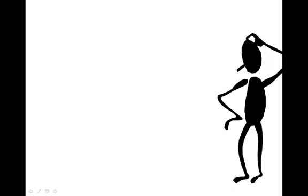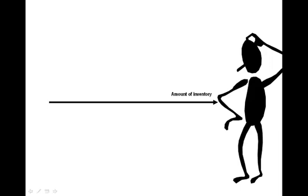So why are these effects so pervasive? In order to understand this, let's look at a simple rule with regard to inventory: inventory is a problem when there is too much and also when there is too little. Let's build a graph to illustrate this rule. The x-axis represents the amount of inventory — the farther to the right, the more the inventory. The y-axis represents the value of the inventory to the business. On the top side of the x-axis, inventory is deemed an asset; on the bottom side, it is deemed a liability.